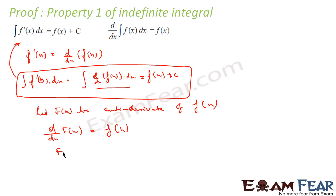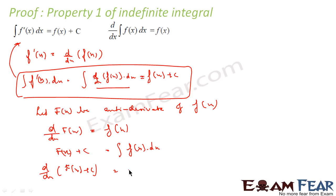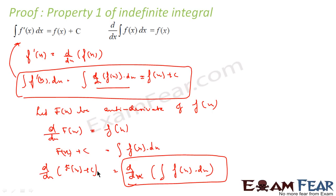Integrating both sides: the left side becomes F(x) plus some constant c, and the right side becomes the integral of f(x) dx. Now differentiating both sides: d/dx of F(x) + c equals d/dx of the integral of f(x) dx. The derivative of F(x) + c is f(x), so we thus prove that differentiating the integral gives back f(x).